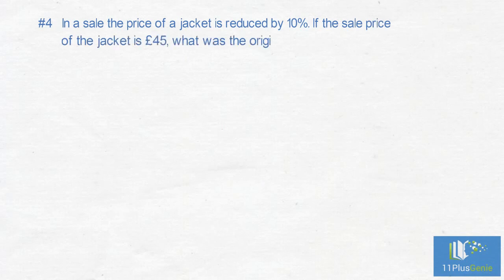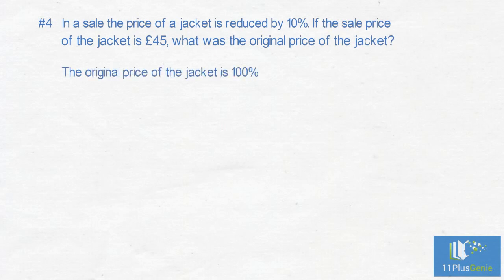Number 4: In a sale, the price of a jacket is reduced by 10%. If the sale price of the jacket is £45, what was the original price of the jacket? The original price of the jacket is 100%. You pay 10% less for the jacket.